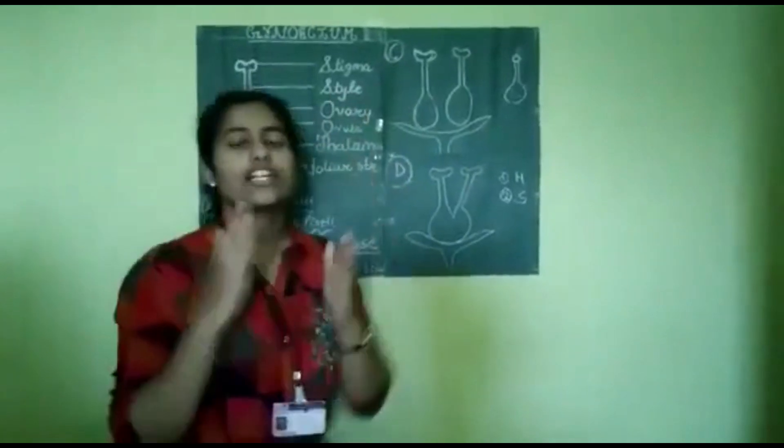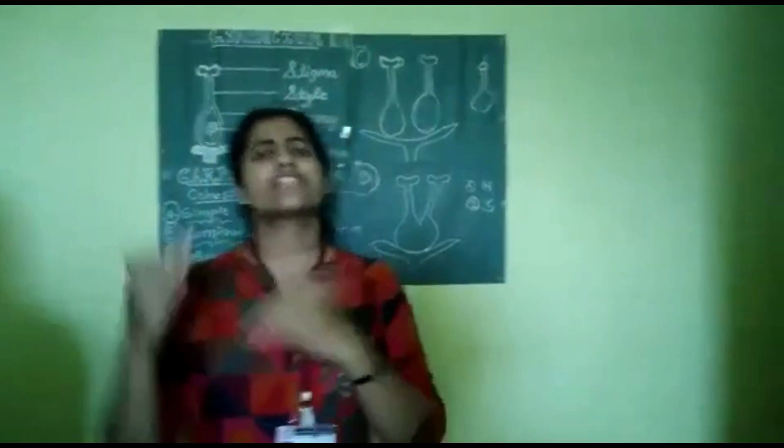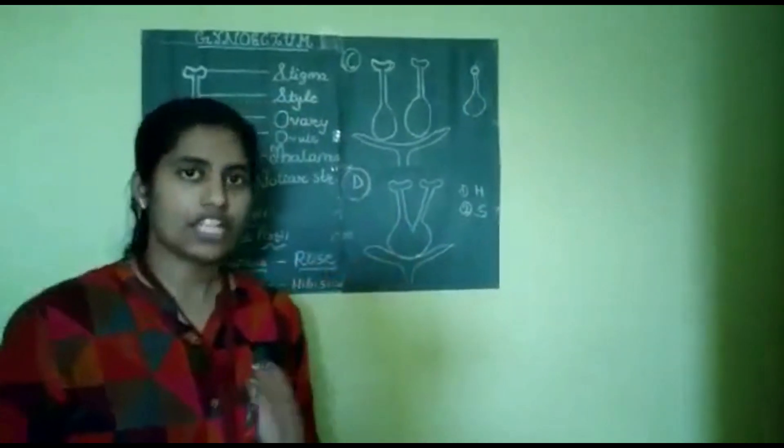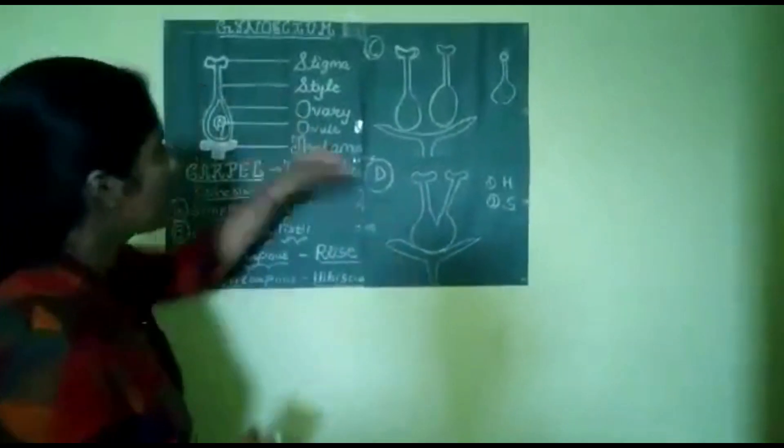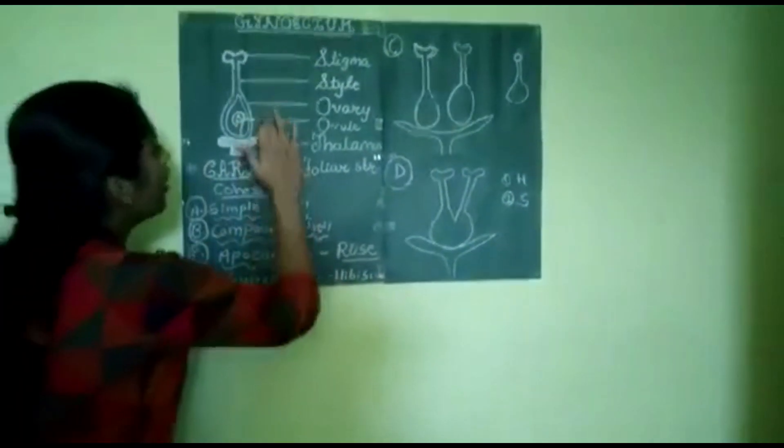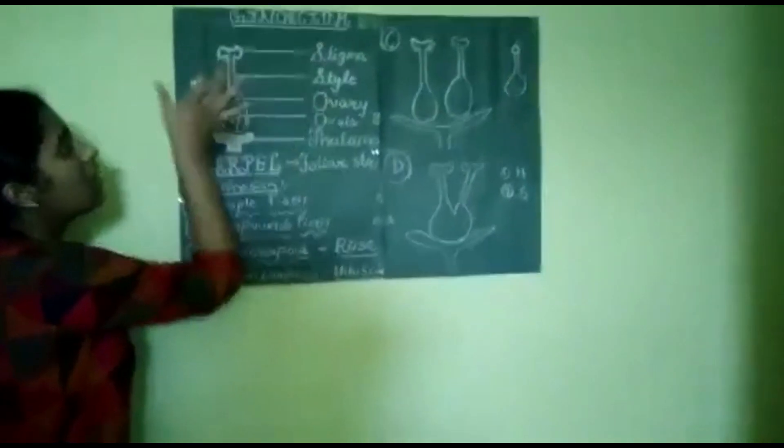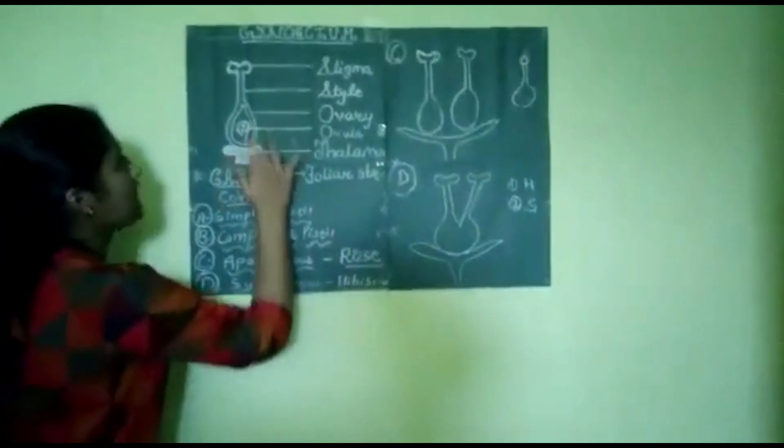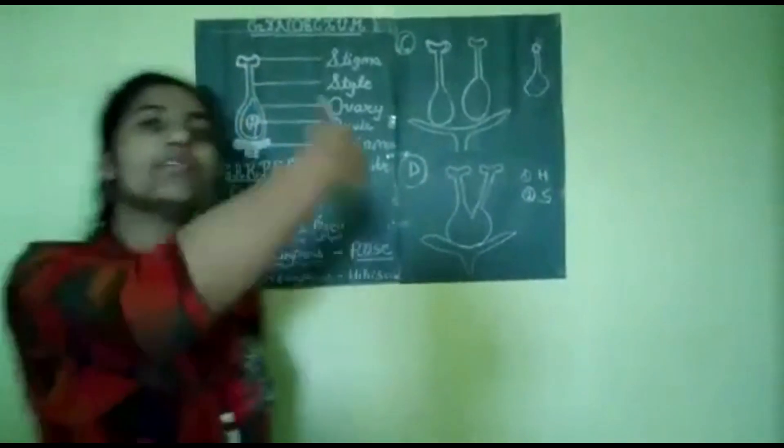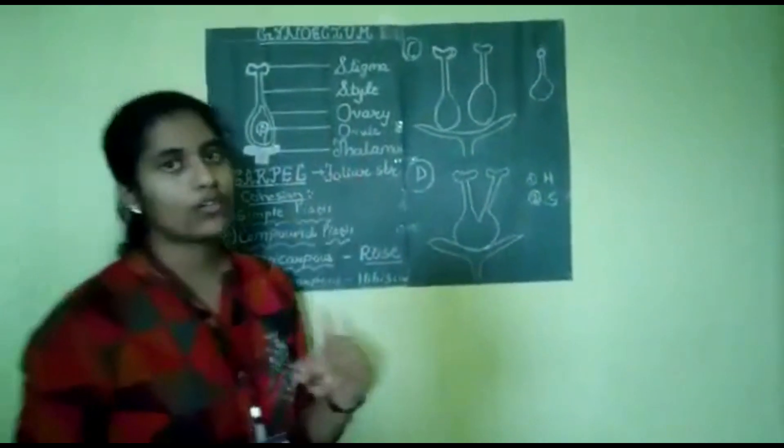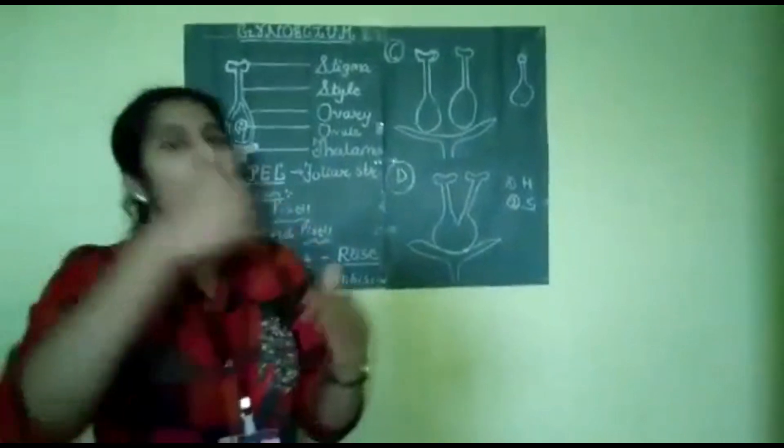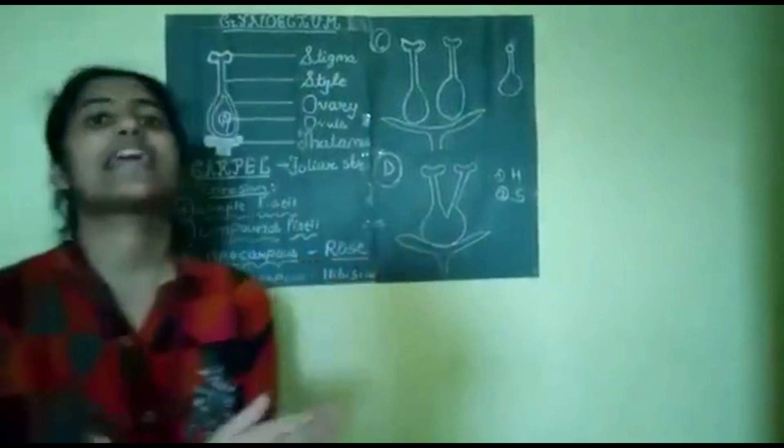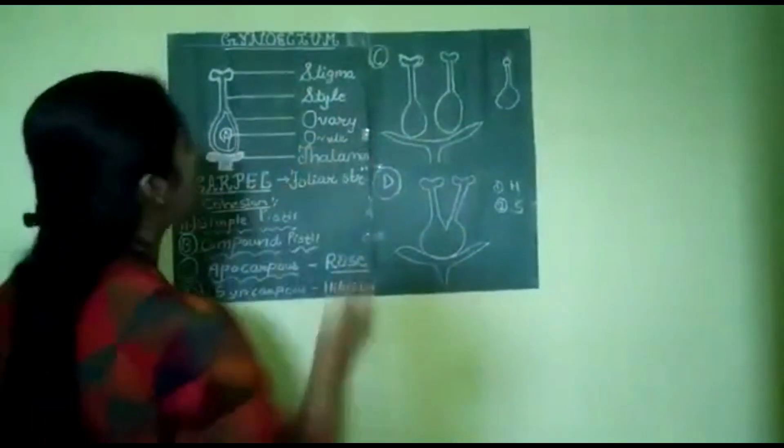Now let's start the differencing point of the ovary. Ovary is differentiated according to their position. They are divided into two different types: superior ovary and inferior ovary. Superior ovary is such type of ovary in which the ovary bears at the uppermost portion. In the sense, the thalamus, sepals, petals, these are lying below the ovary. But in case of inferior ovary, the ovary is bearing at the basal region. It means in the sense, sepals, petals, thalamus, these are lying at the uppermost portion.